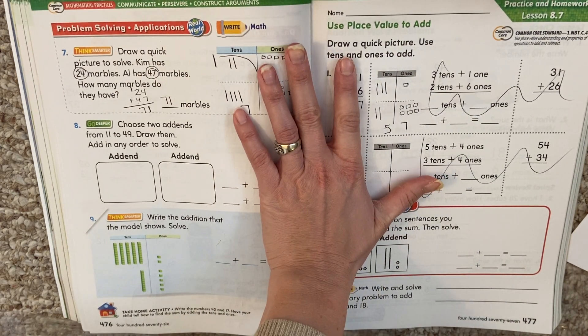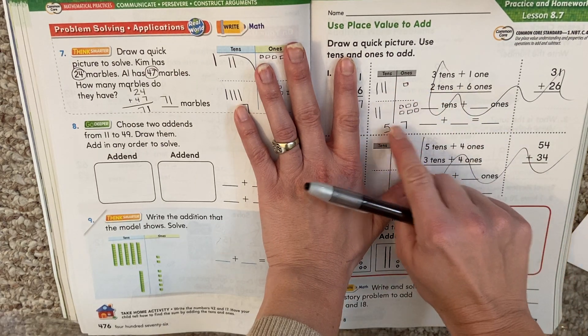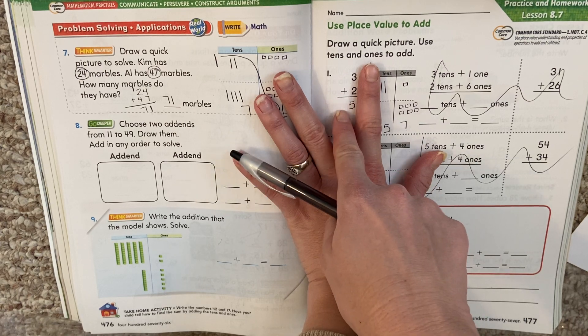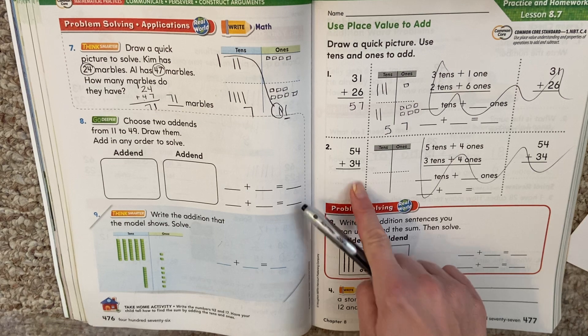And I could see that if I added down. One plus six. Just like what I did here. Seven. Three plus two. Five. Just like what I did here.